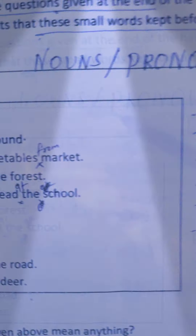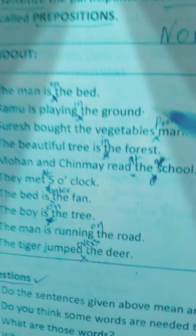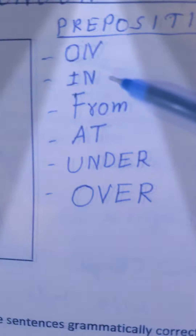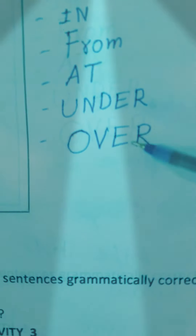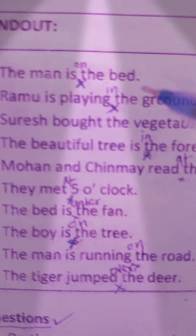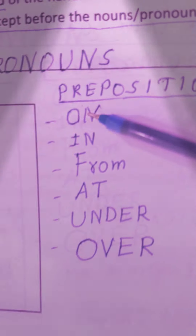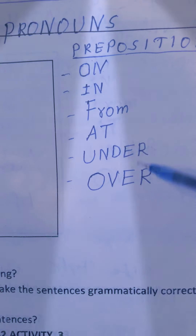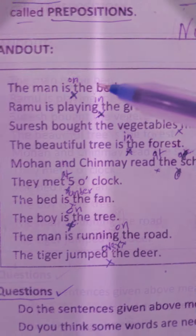Go into nouns and pronouns. Here are small sentences with some prepositions: on, in, from, at, under, over. Use these prepositions to fill the given sentences before nouns and pronouns. Here are ten sentences. Use on, in, from, at, under, over — place these prepositions in the correct place to make a correct sentence.